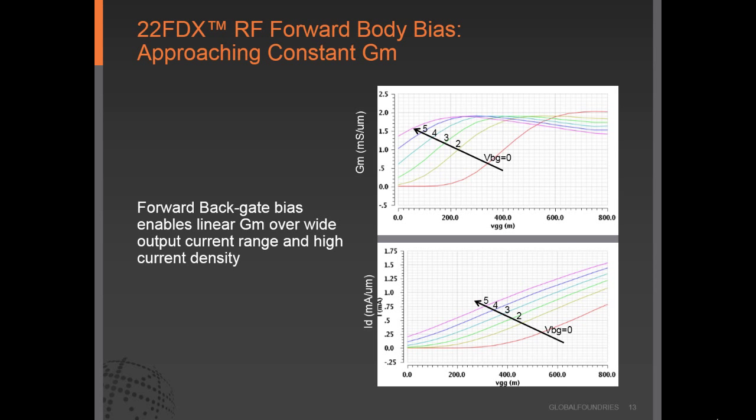Analog applications can also leverage the body biasing capability of 22FDX. In fact, in some situations, certain devices for analog applications can be both forward and reverse body biased for a single device. Forward body bias for analog applications can widen the overall linear region of operation. In this particular example, a device biased with forward body biasing up to 5 volts on the back gate allows the device to reach saturation GM quickly. The high GM exists over an entire VG range, providing improved dynamic range and linearity for analog applications.